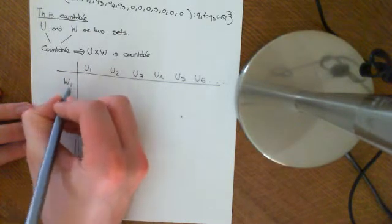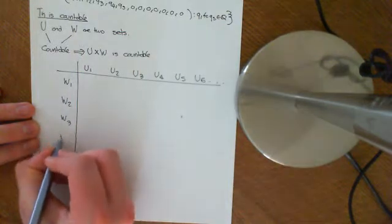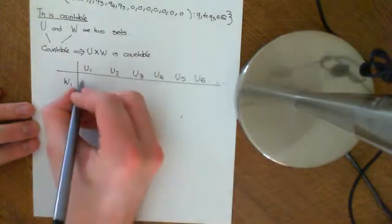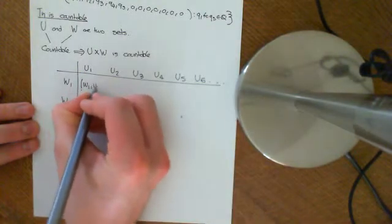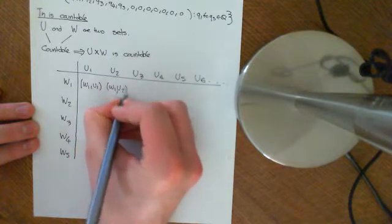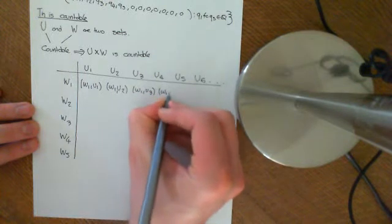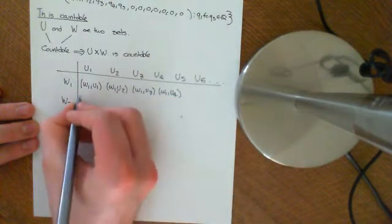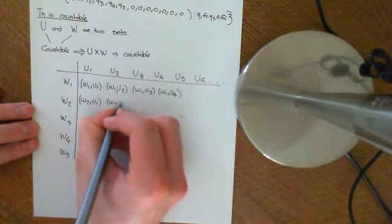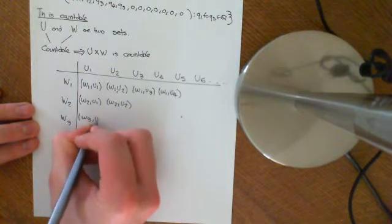Similarly, if W is countable, you can list out W1, W2, W3, W4, W5, etc. When we take the Cartesian product, we get a table: the first row is (W1,U1), (W1,U2), (W1,U3), (W1,U4), and so on. The next row has (W2,U1), (W2,U2), etc. And then (W3,U1), etc.